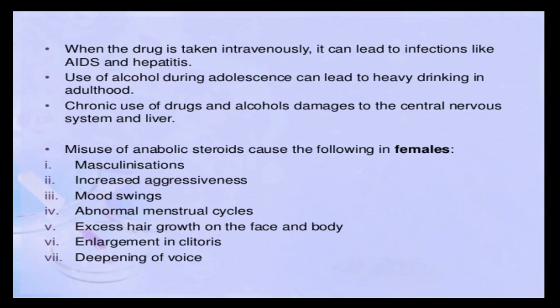When drugs are taken intravenously, it can lead to infections like AIDS and hepatitis. Use of alcohol during adolescence can lead to heavy drinking in adulthood — someone who only experimented during adolescence may become a serious alcoholic when they enter adulthood. Chronic use of drugs and alcohol damages the central nervous system and liver, and causes cirrhosis of the liver due to excessive use of alcohol.